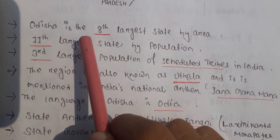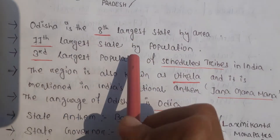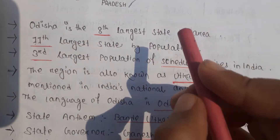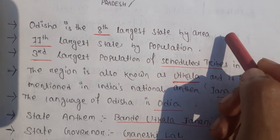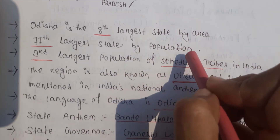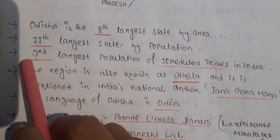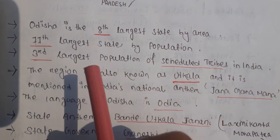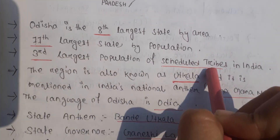Odisha is the 8th largest state by area and the 11th largest state by population in India. The largest state by area in India is Madhya Pradesh, and by population it is Uttar Pradesh. Odisha has the 3rd largest population of Scheduled Caste and Scheduled Tribe people in India.